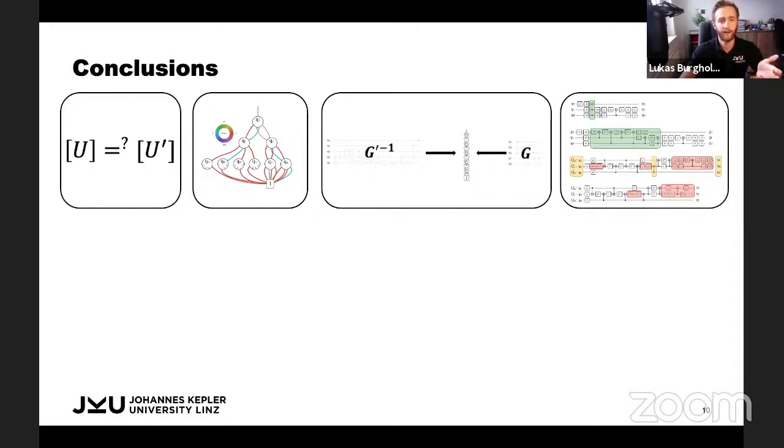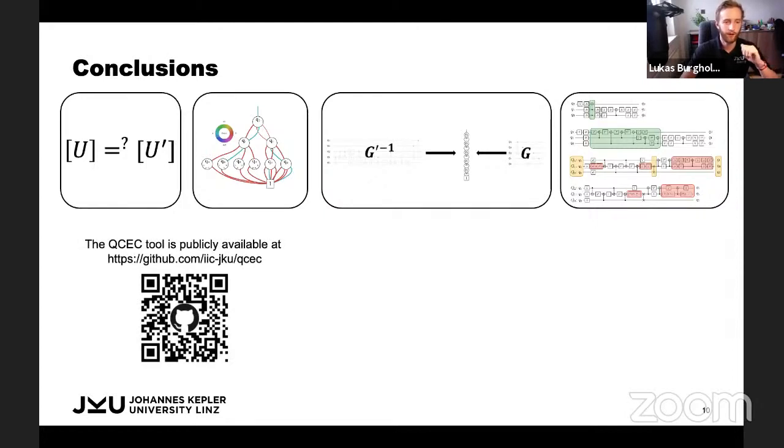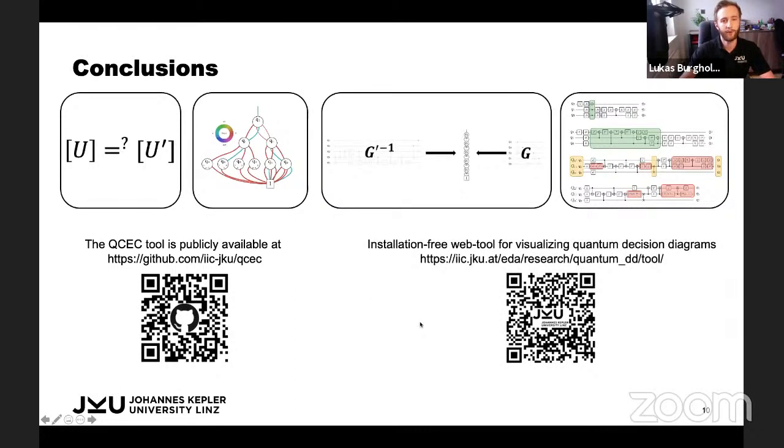Eventually, this allowed us to verify the results of IBM Qiskit within a matter of seconds where state-of-the-art techniques time out and require substantial runtime. The proposed tool is publicly available under the link you see here. Feel free to check it out. We're happy for feedback and for questions. If you ever want to learn more about this type of decision diagram and how it's used for simulation or verification, then also feel free to check out our installation-free web tool we recently launched for visualizing decision diagrams and how they can be employed. With this, I would like to thank you for your attention and I'm open for questions.